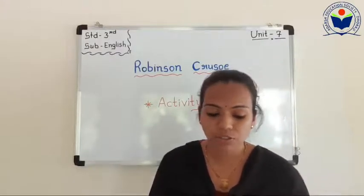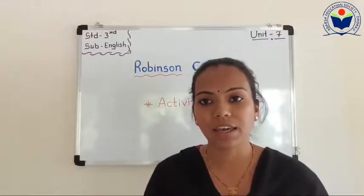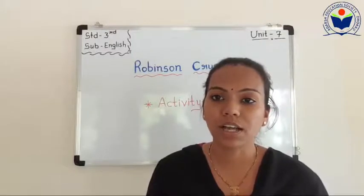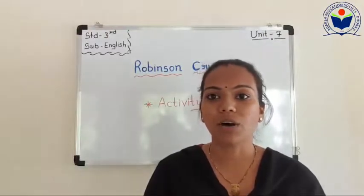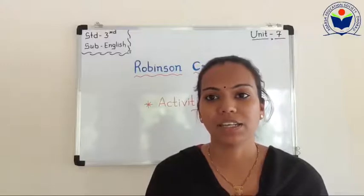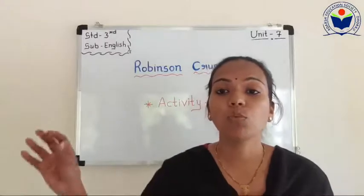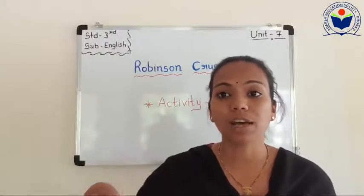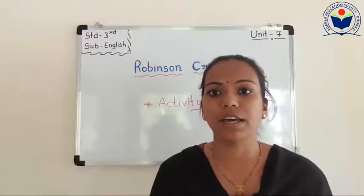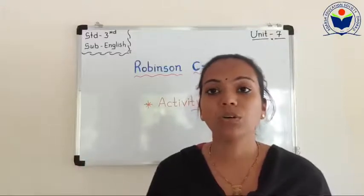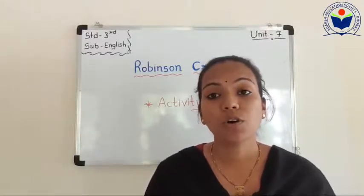Aapne dekha hoga, Robinson Crusoe ki yeh story ek island ke baare mein hai. Kya aapne islands dekhe hain? Bahut saare students ne dekha hoga, ya phir nahin bhi dekha hoga — aisa bhi ho sakta hai. Don't worry, today we will create an island here, and jungle also. Yani ki ek island hota hai — woh kahan hota hai? Most of islands aapne dekhi hongi, toh woh samudra, yani ki sea hoti hai, uske beach mein, jo ek mountain jaisa create hota hai, wahan pe ek land ban jaati hai.